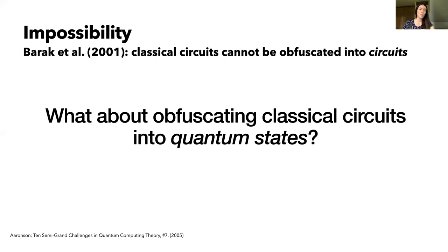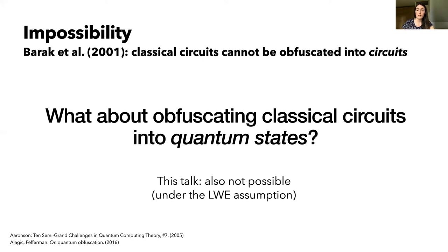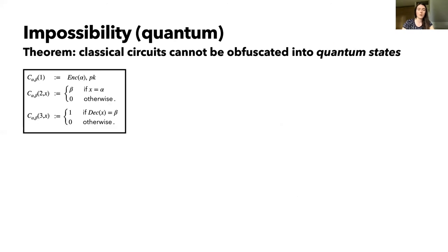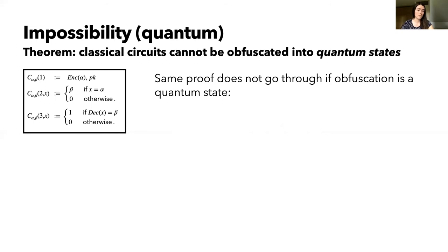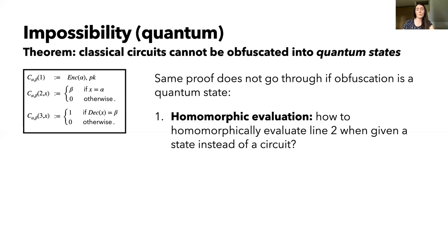But the full general result for quantum states turned out to require some tools that we didn't even have back then. In this talk I will complete their argument and show that obfuscating classical circuits into quantum states is also not possible. Our result generalizes this classical impossibility result, but it only holds under a variant of the learning with errors assumption. The classical proof doesn't immediately work in the quantum setting anymore, and that's mainly for two reasons. First, the homomorphic evaluation: a quantum obfuscation would not be a classical circuit anymore, so we cannot just straightforwardly break it up into gates that we can homomorphically evaluate — it's not even necessarily a quantum circuit, it can be a quantum state, so how do you break it up into individual gates?